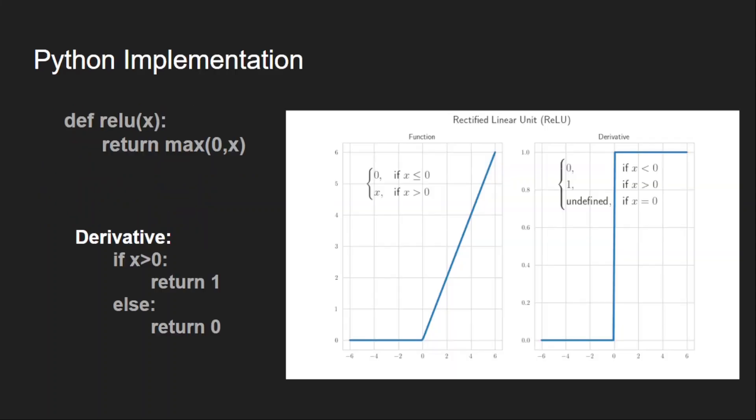Now let's see the Python implementation. It's very simple - just take the maximum of zero and the input. If you take the derivative also, it is one if the input is positive, otherwise it is zero.